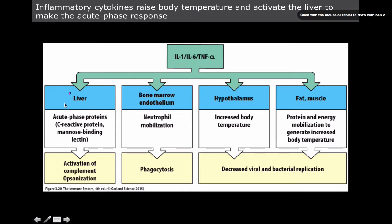At the liver we have C-reactive protein and mannose-binding lectin (MBL), which leads to activation of complement and ultimately opsonization. We also have, whenever these reach the bone marrow endothelium, a lot of activation of neutrophils, getting them to the site of the infection.